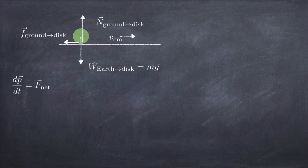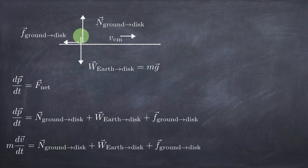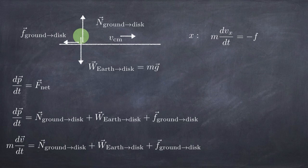Let's apply the momentum principle — Newton's second law — which says the rate of change of momentum equals the sum of forces, or equivalently, mass times the rate of change of velocity equals the sum of forces. Breaking into components: the x-component says mass times the rate of change of the x-component of center of mass velocity equals the negative of the magnitude of the frictional force.